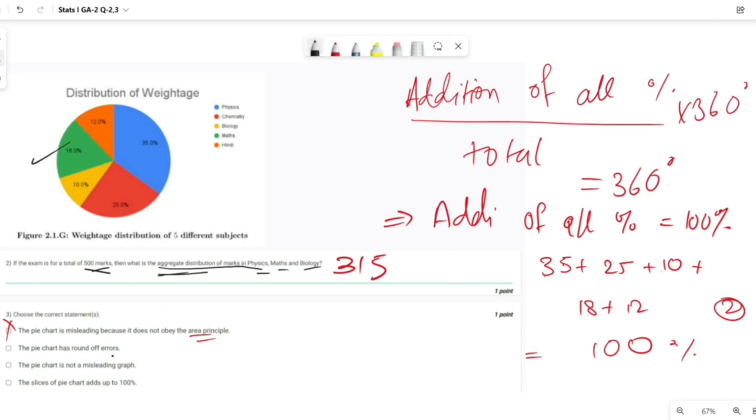Pie chart has round of errors? No, it does not have round of errors because addition is exactly 100.00%, so second option is also wrong. Pie chart is not misleading graph? Yes, true. The slices of pie charts add up to 100%? Yes, that's also true. Thank you for watching, please subscribe to our channel for upcoming videos and graded assignment solutions.